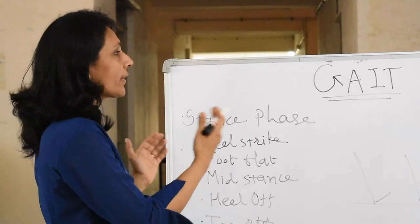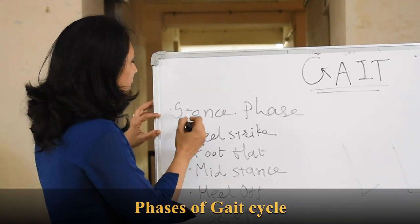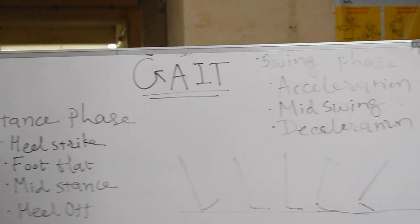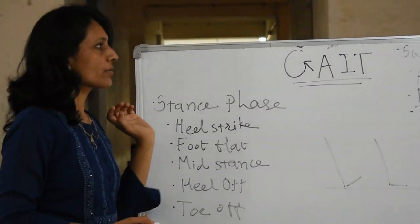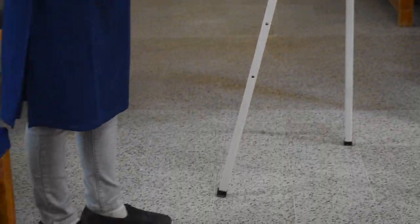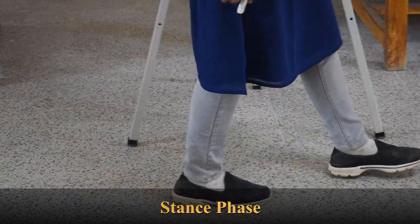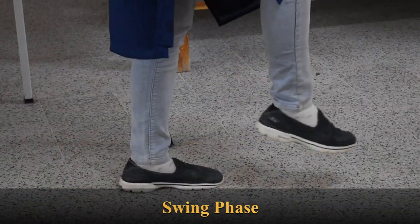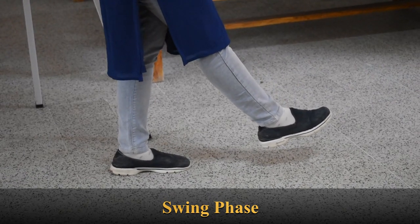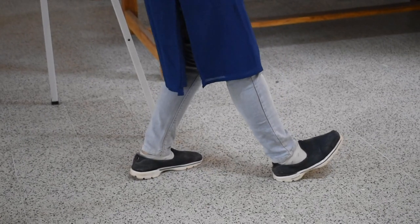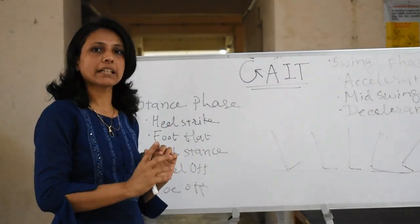The gait cycle comprises two phases: one is the stance phase and another is the swing phase. The stance phase is when my extremity is in contact with the ground. When my extremity is lifted off into the air, that whole phase is called the swing phase. Together, stance and swing phase give you a single gait cycle.